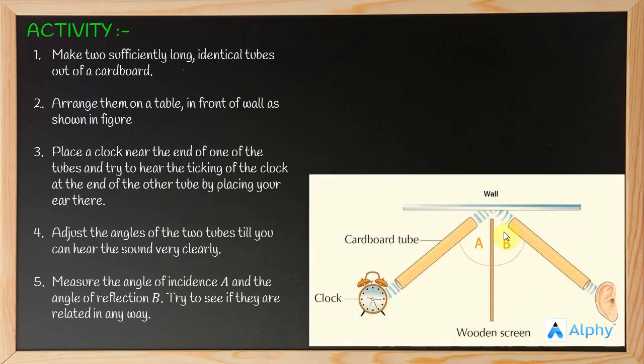Try to see if they are related in any way. So here in my diagram, the same thing: cardboard, two tubes placed on the table, clock at one end, and ear at the other end to hear the ticking. This angle is angle of incidence A and this is angle of reflection B.